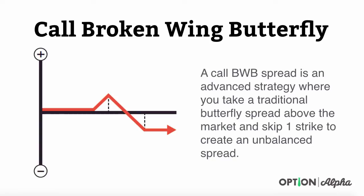This broken wing butterfly spread is an advanced strategy where you take a traditional butterfly spread that you have above the market and you skip one strike when you create this spread to basically make it unbalanced. You can see that's where it gets its name, this broken wing, because the right side of the profit loss diagram on your screen has this lower wing than the left side. It's an unbalanced spread.